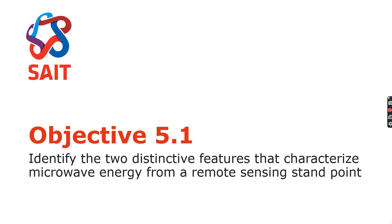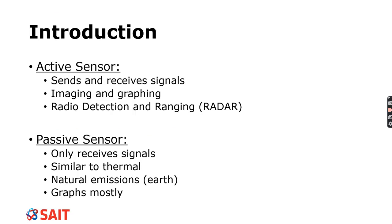So the learning outcome for this module is to defend the importance of sensors operating in the microwave electromagnetic spectrum and their value to environmental and resource disciplines. The first objective is to identify two distinctive features that characterize microwave energy from a remote sensing standpoint. I thought that I should approach this in a little bit of a different way. So the first one being what kind of sensors are there? Then I'll be talking about the microwave wavelengths, and then I'll talk about some of the advantages and disadvantages.